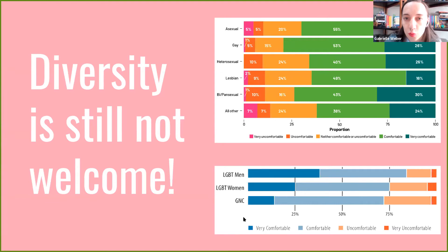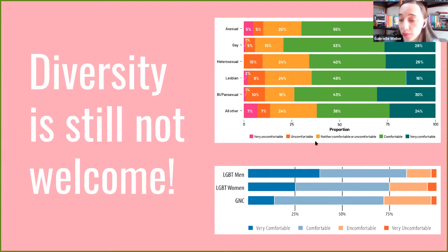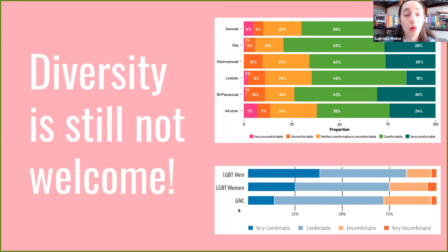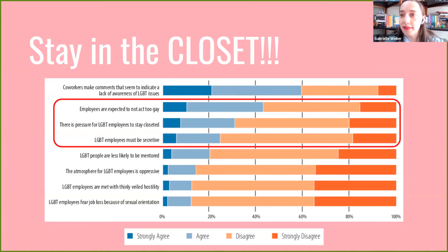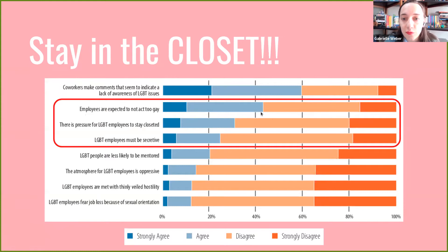The studies found that diversity is still not welcome. A vast proportion of lesbian women are not comfortable in academia. LGBT women are 25% not comfortable, and gender non-binary people — more than 25% — are not comfortable in academia. There is a clear message to stay in the closet. At least 40% of participants agreed that they are expected not to act too gay, or must be secretive about their lives in academia.